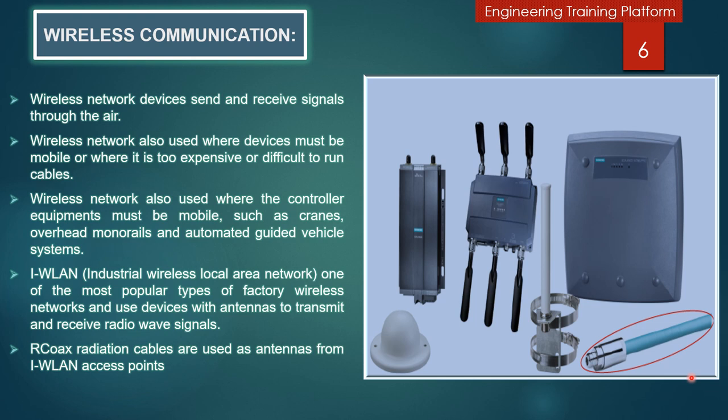The wireless connection includes R-Coax radiation cable — you can see in the picture these R-Coax cables. R-Coax cables are used as antennas from industrial access points. Openings in the outer conductor of the R-Coax cable provide a defined signal strength along the entire length of the cable, enabling reliable radio links in areas where conventional antenna technology is not practical.